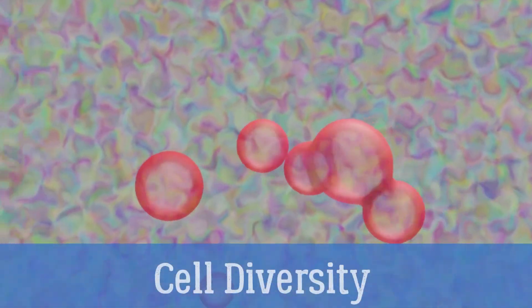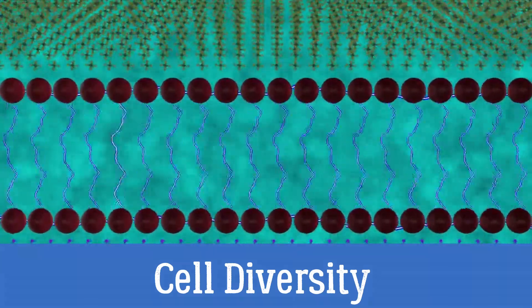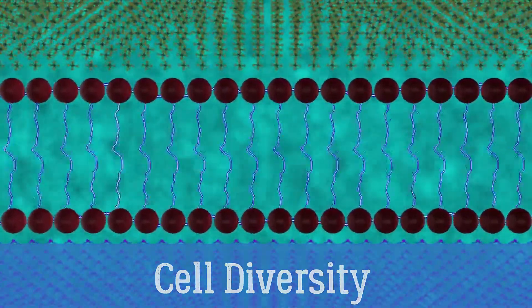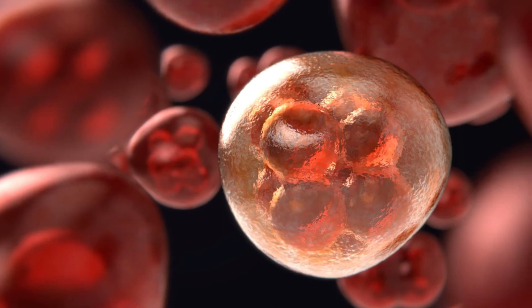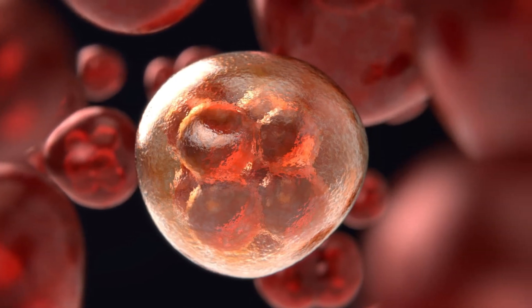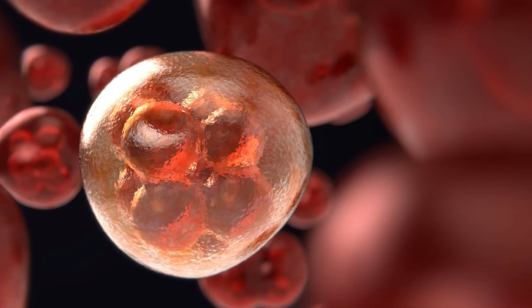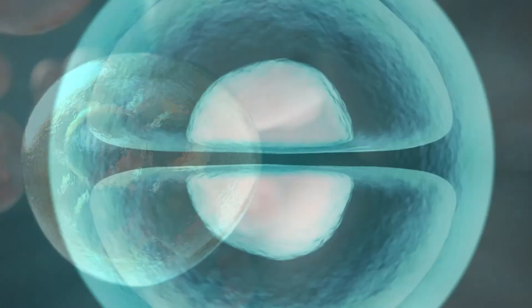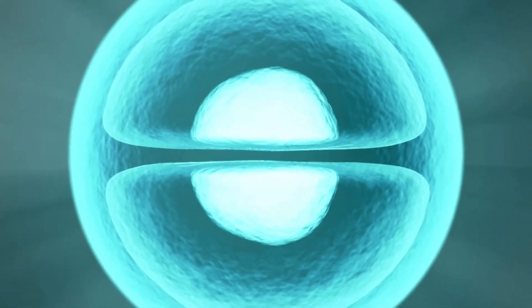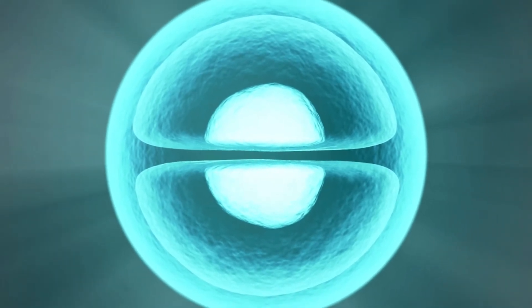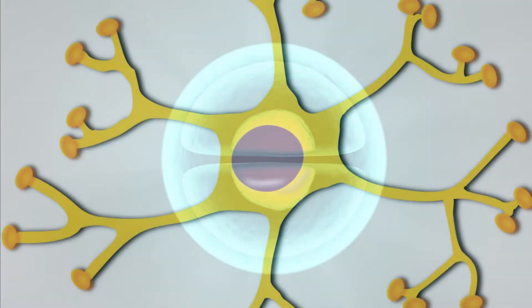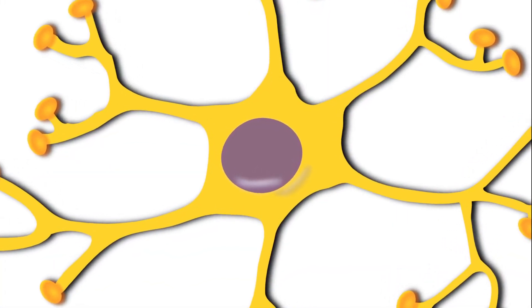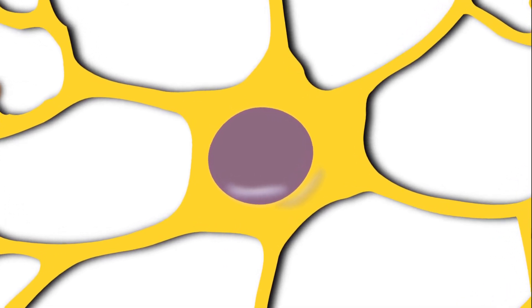Cells with different functions often have different shapes. Each type of cell has a shape that helps it to do its job. For example, the job of a nerve cell is to carry messages to other cells. The nerve cell has many long extensions that reach out in all directions, allowing it to pass messages to many other cells at once. Do you see the tail-like projections on the algae cells? Algae lives in water and their tails help them swim. Pollen grains have spikes that help them stick to insects such as bees.